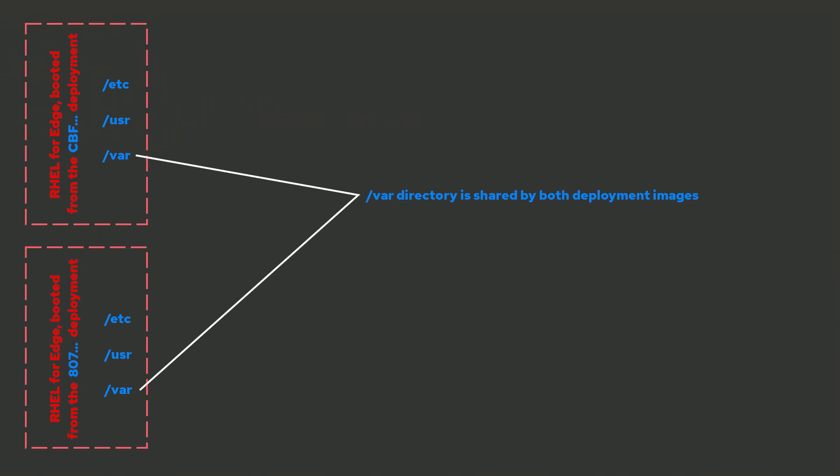It's important to note that the VAR directory is shared between deployments. In most cases, you'll have two deployment images available, which will usually be the image you're currently booted from and the previous image before you last updated. You can reboot the system and from the bootloader choose to boot from either of these deployments. In either case, the same VAR directory is going to be mounted. So for example, you could create a file under slash VAR, reboot, select the other deployment, and the file would still be visible as they both share the same VAR directory.